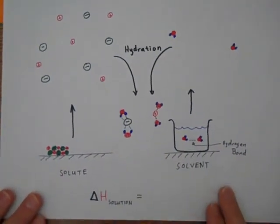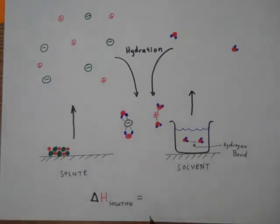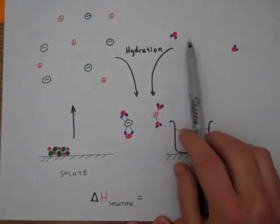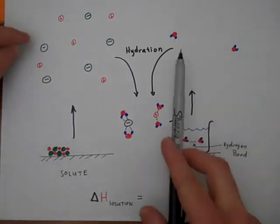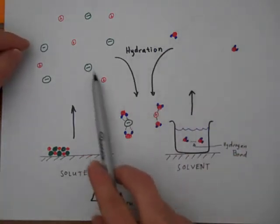To do that, we're going to break the process down into steps. We'll start with sodium chloride and imagine converting it to a gas by breaking all ionic bonds, separating them into gas phase ions. Over here, we'll do the same with the solvent, breaking hydrogen bonds to get gas phase water molecules.